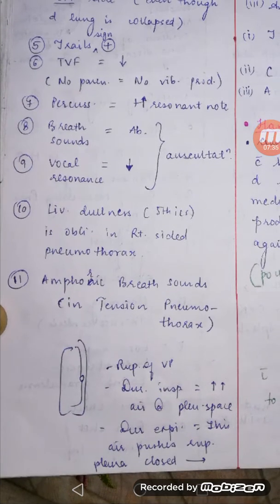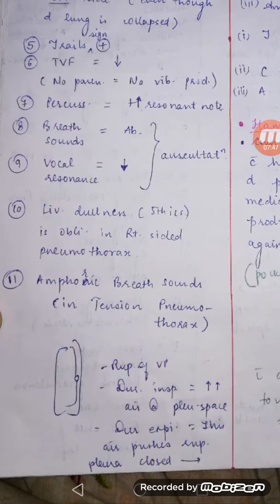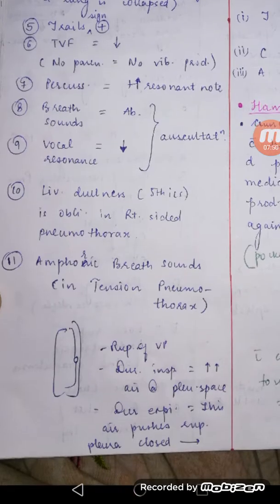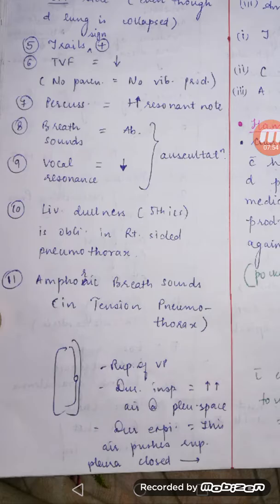On percussion, you will get a hyper-resonant note because so much air is filled up. This hyper-resonant note can also obliterate liver dullness in the fifth intercostal space with a right-sided pneumothorax, falsely hiding the liver dullness. So TVF and vocal resonance decrease on palpation and auscultation, but percussion gives a hyper-resonant note.